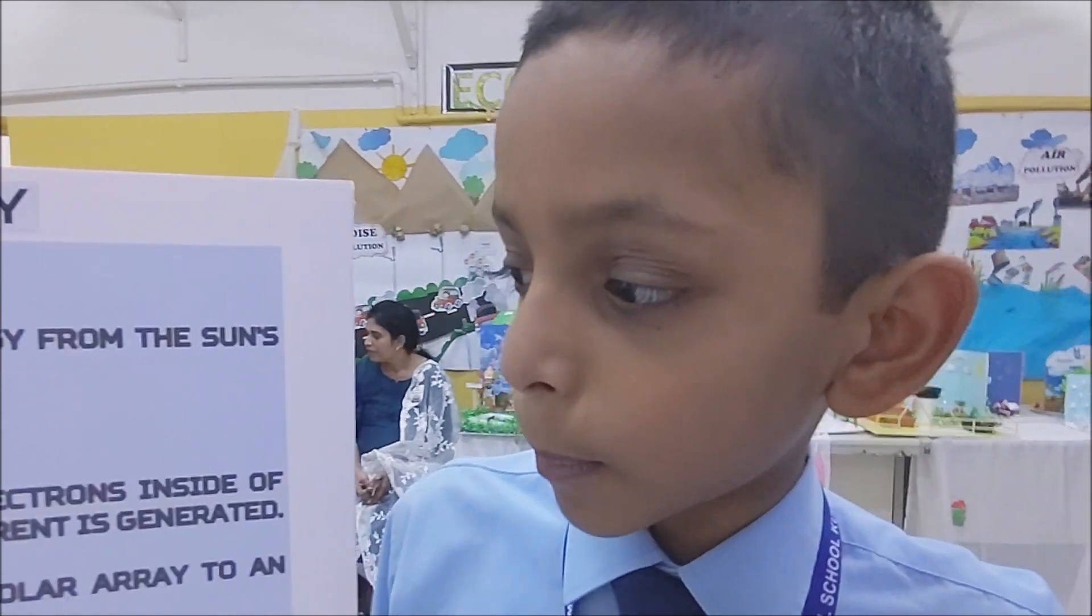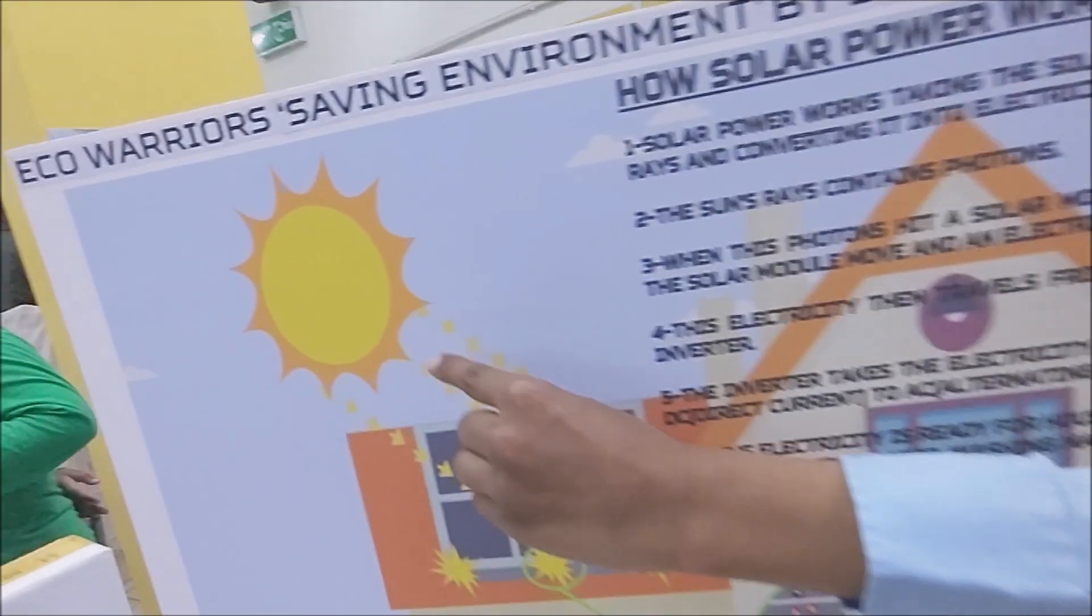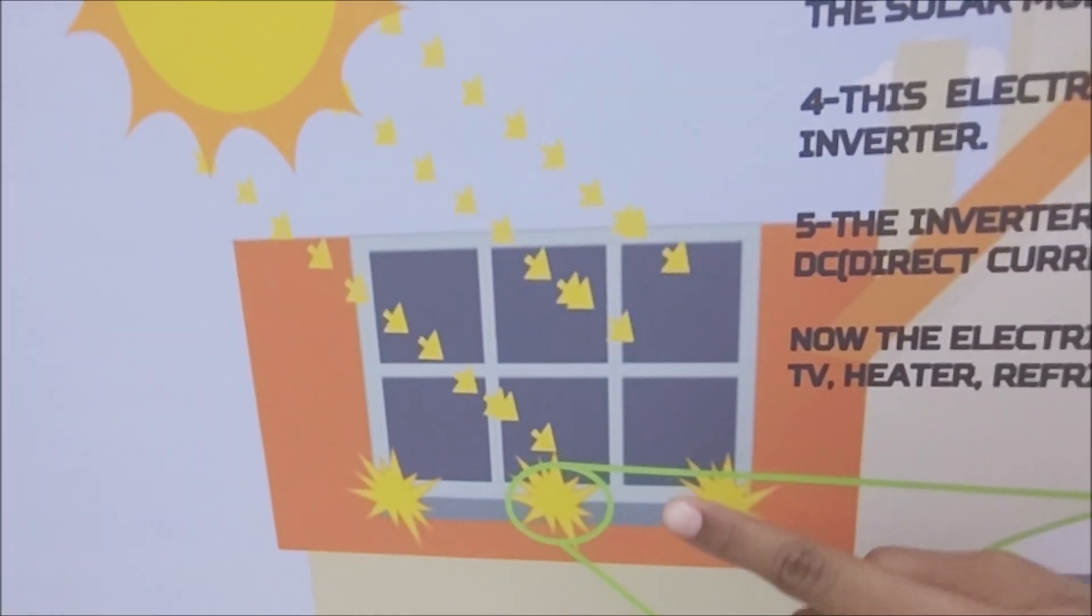Today I will tell you how solar power works. Solar power works by taking the solar energy from the sun's rays and converting it into electricity.